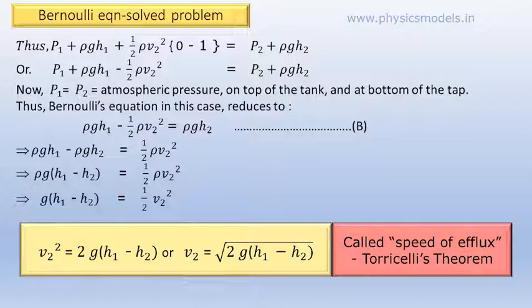Rearranging we get ρg(h1 - h2) = ½ρv2². Now, we have v2 squared in our hands and we can say v2² = 2g(h1 - h2) or v2 = √[2g(h1 - h2)]. This is called the Torricelli's theorem and is applied for all cases where the speed of efflux is relevant.